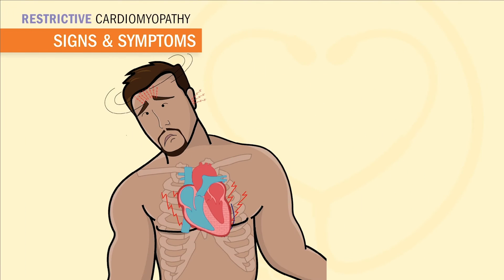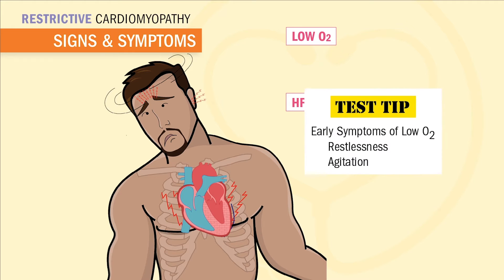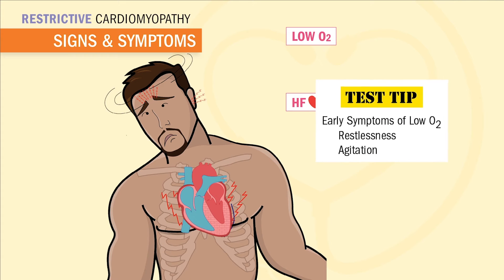Just like in dilated cardiomyopathy, your heart is not an effective pump anymore. Even though the pathophysiology is a little bit different here, our signs and symptoms are quite similar — all revolving around heart failure due to this pump failure. In this case, from a stiff heart. In heart failure, we know that fluid backs up into the body or into the lungs. This low cardiac output means low oxygen to the body, so we're going to see all the signs and symptoms stem from this low oxygen and blood being backed up.